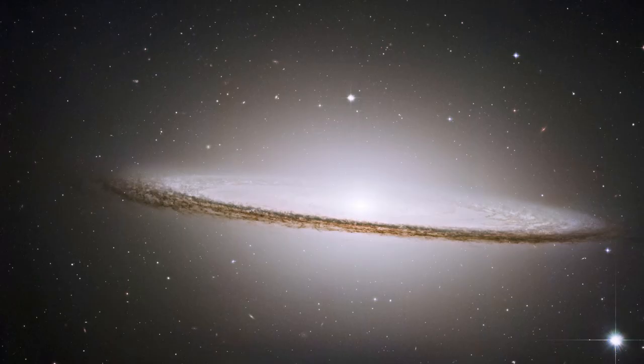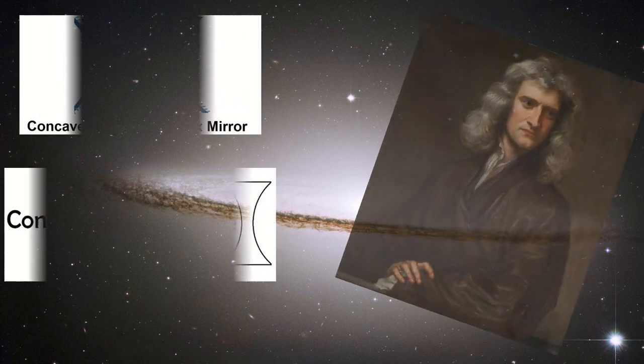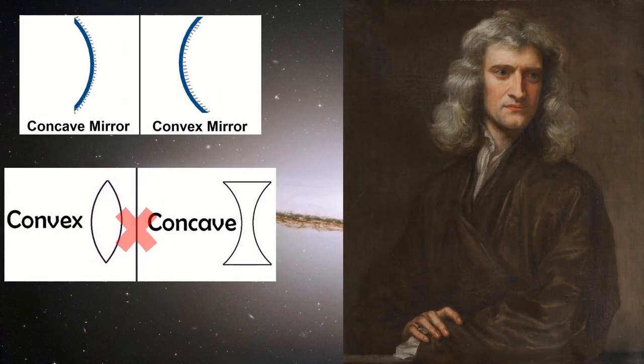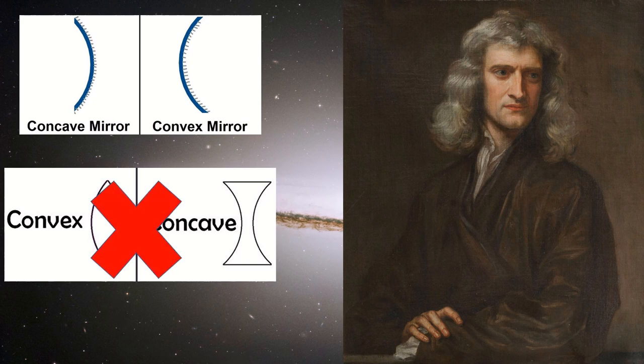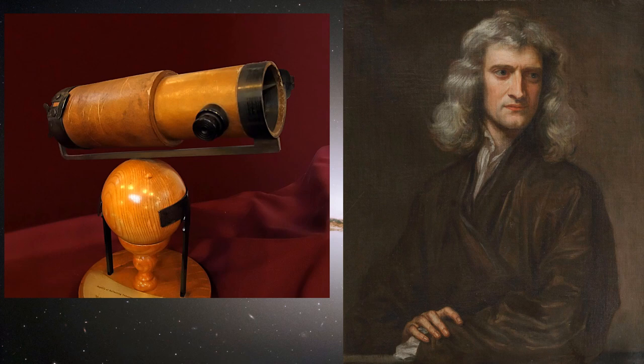Reflectors. And the man behind this, you guessed it right, Sir Isaac Newton. Newton used mirrors instead of lenses, which made it possible for the telescopes to shrink in size and easy to carry. You can see one of the early Newtonian reflectors on your screen.